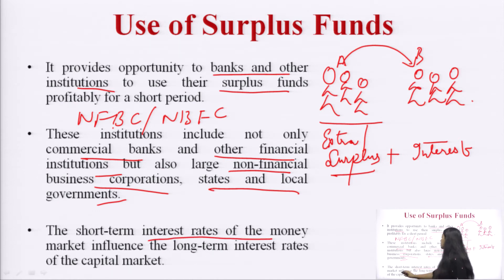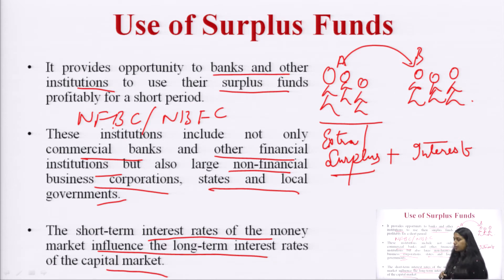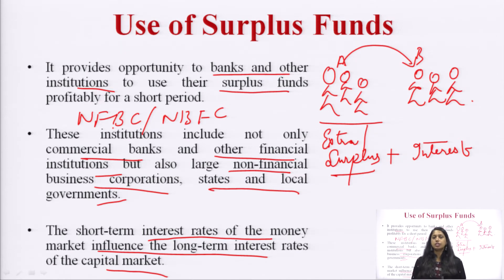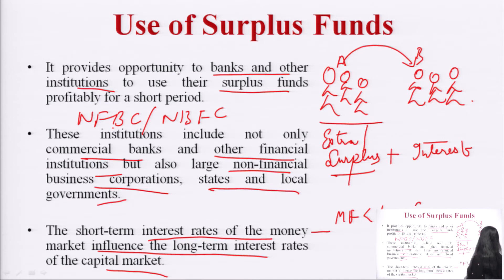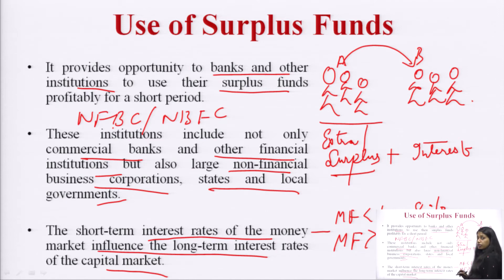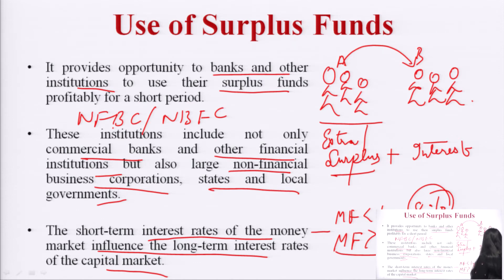Short-term interest rates in the money market influence long-term interest rates in the capital market. If you are investing in a mutual fund for less than one year and getting eight percent return, a mutual fund with a tenure of more than three years must offer more than eight percent — say 8.2 percent — otherwise you would never invest in it. So the money market directly influences interest rates in the capital market.